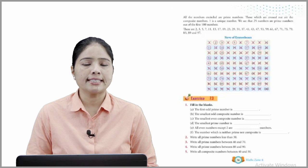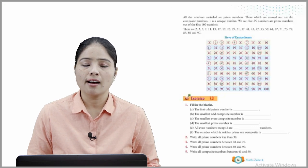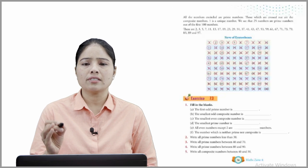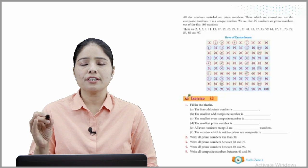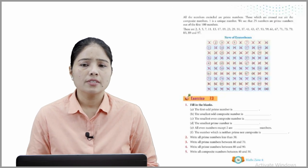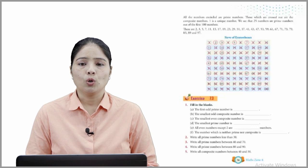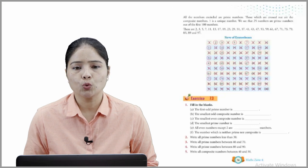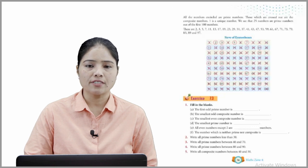We see that 25 numbers are prime numbers out of the first 100 numbers. These are: 2, 3, 5, 7, 11, 13, 17, 19, 23, 29, 31, 37, 41, 43, 47, 53, 59, 61, 67, 71, 73, 79, 83, 89, and 97. You just read and practice well.